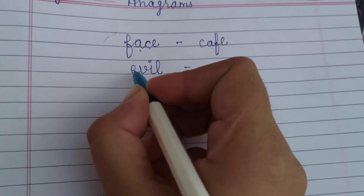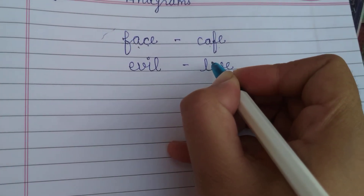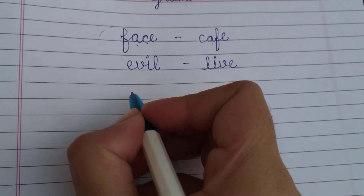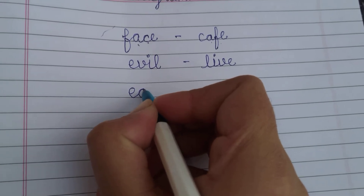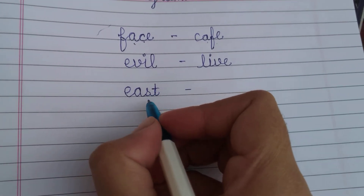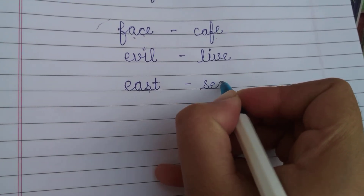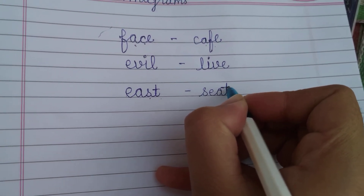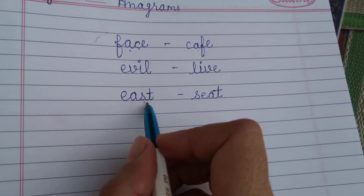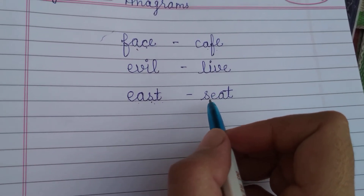L-I-V-E: live. Look at another example — E-A-S-T: east. Rearranging the letters gives S-E-A-T: seat. We rearranged the alphabets of one word to create a new word — these are anagrams.